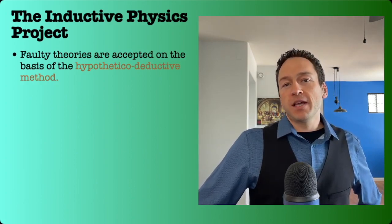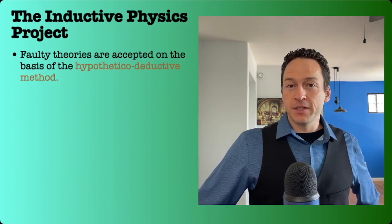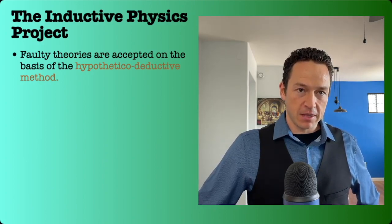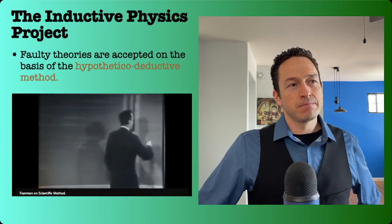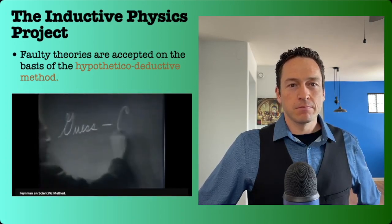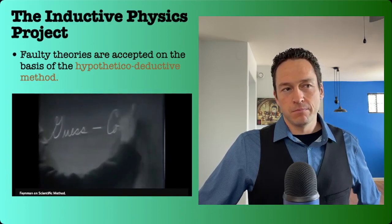The faulty theories of quantum mechanics and relativity are accepted because physicists accept a faulty scientific method. In general, we look for a new law by the following process. First, we guess it. Then we... No, don't laugh. That's really true.